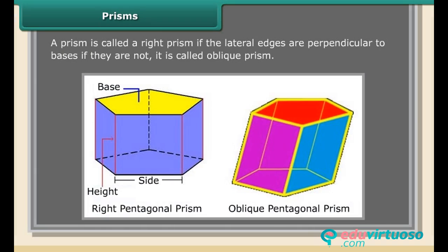A prism is called a right prism if the lateral edges are perpendicular to the bases. If they are not, it is called an oblique prism.